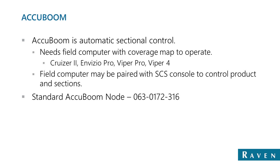The current consoles used for AccuBoom are the Cruiser 2, Invisio Pro 1 and 2, Viper Pro, and the Viper 4. We can also pair the field computer with an SAS console if you currently have one doing your product control — any of the SAS consoles like the 440, 450, or the 4000 and 5000 console series.